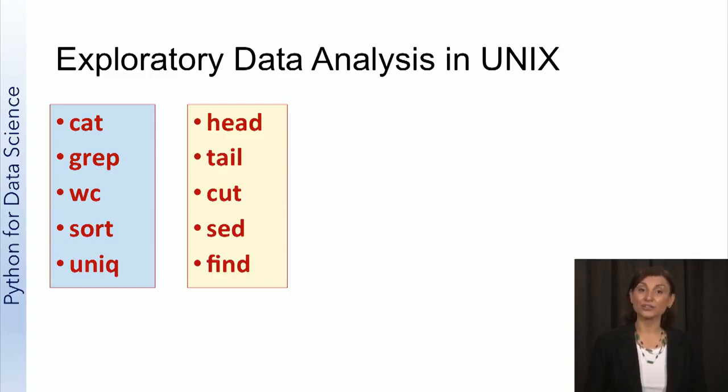The head command is used for listing the first n lines of a text file or an input stream, whereas the tail command lists the last n lines. The cut command is a very powerful command that gives us a way to cut a portion of each line of a file.